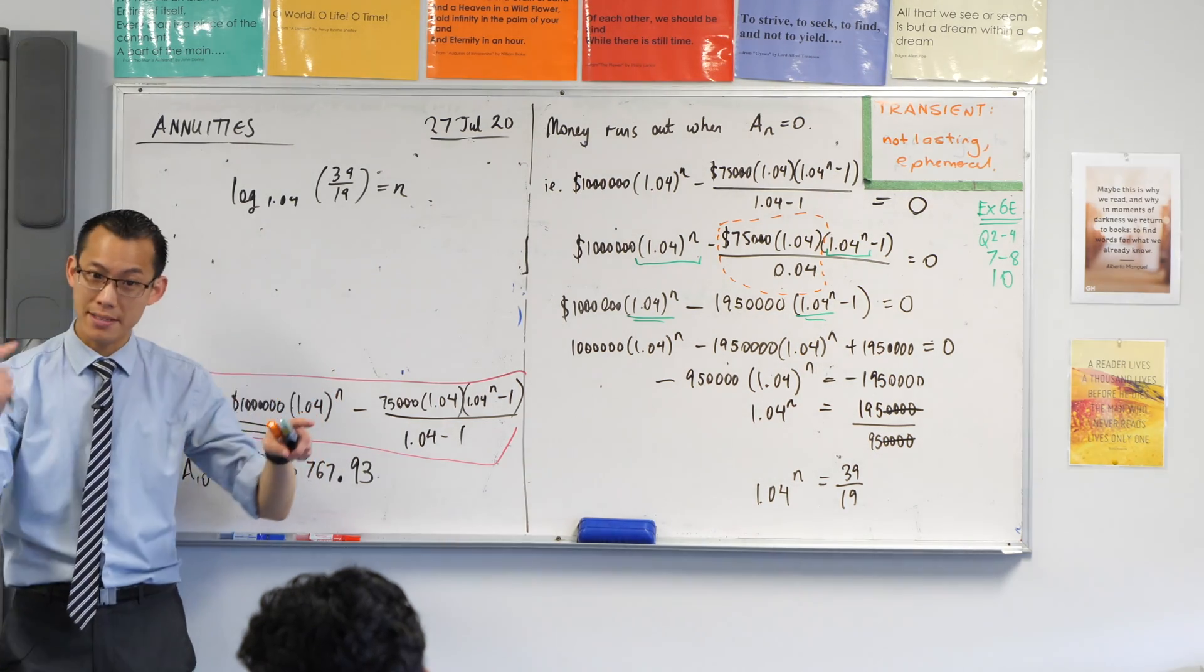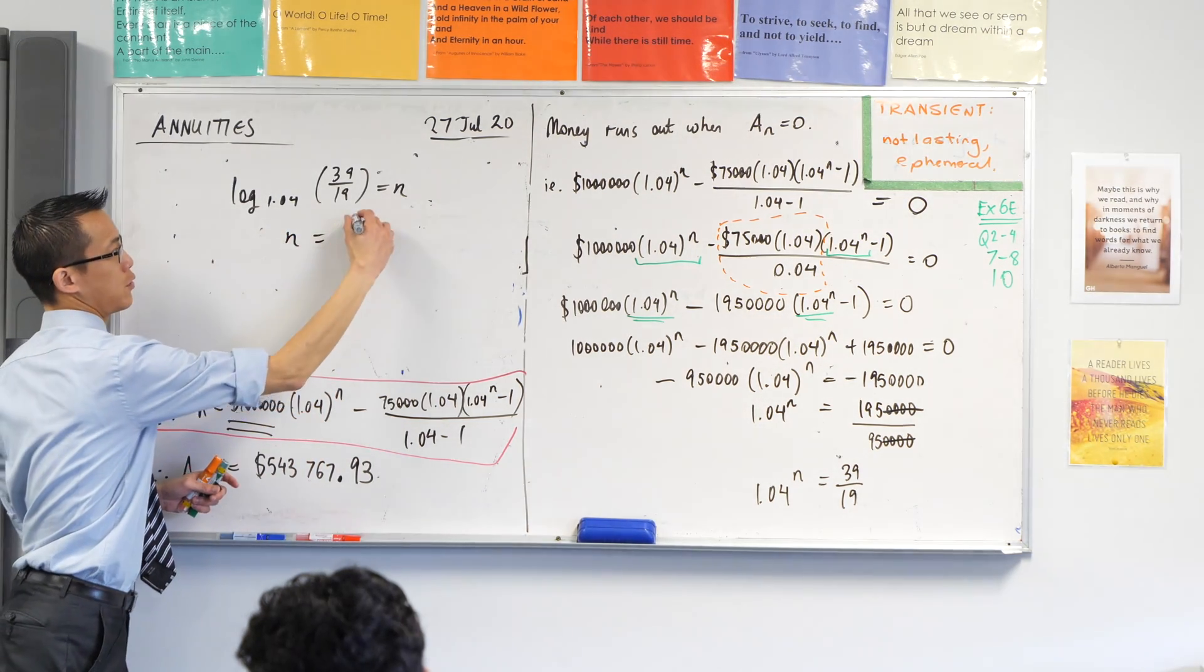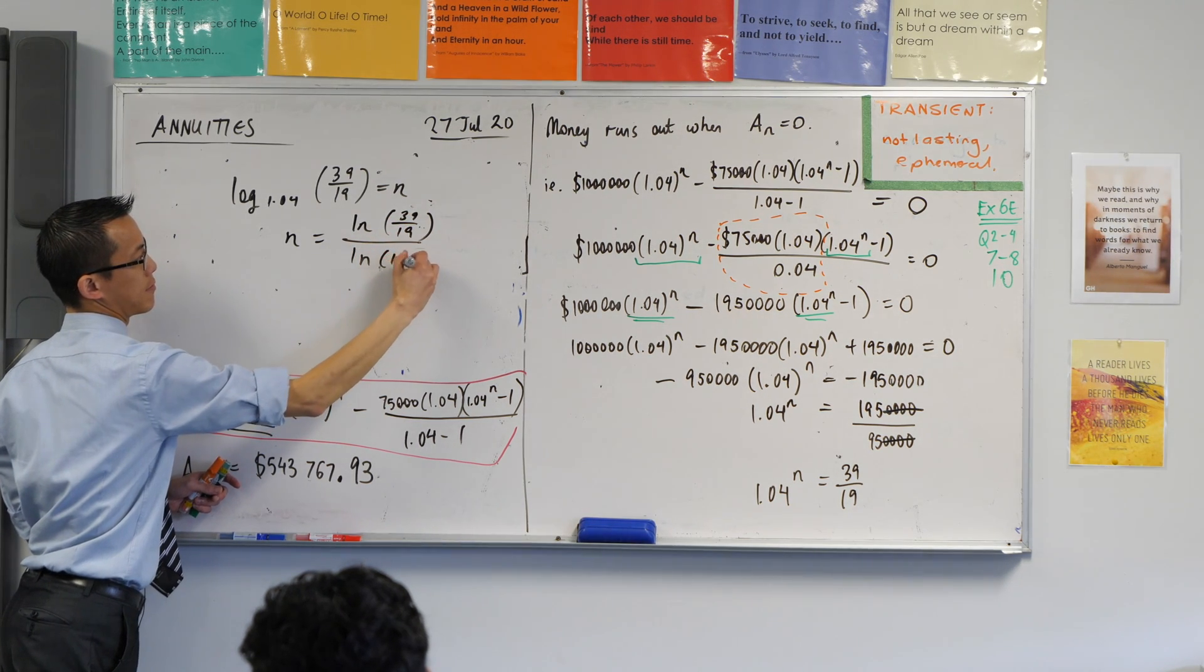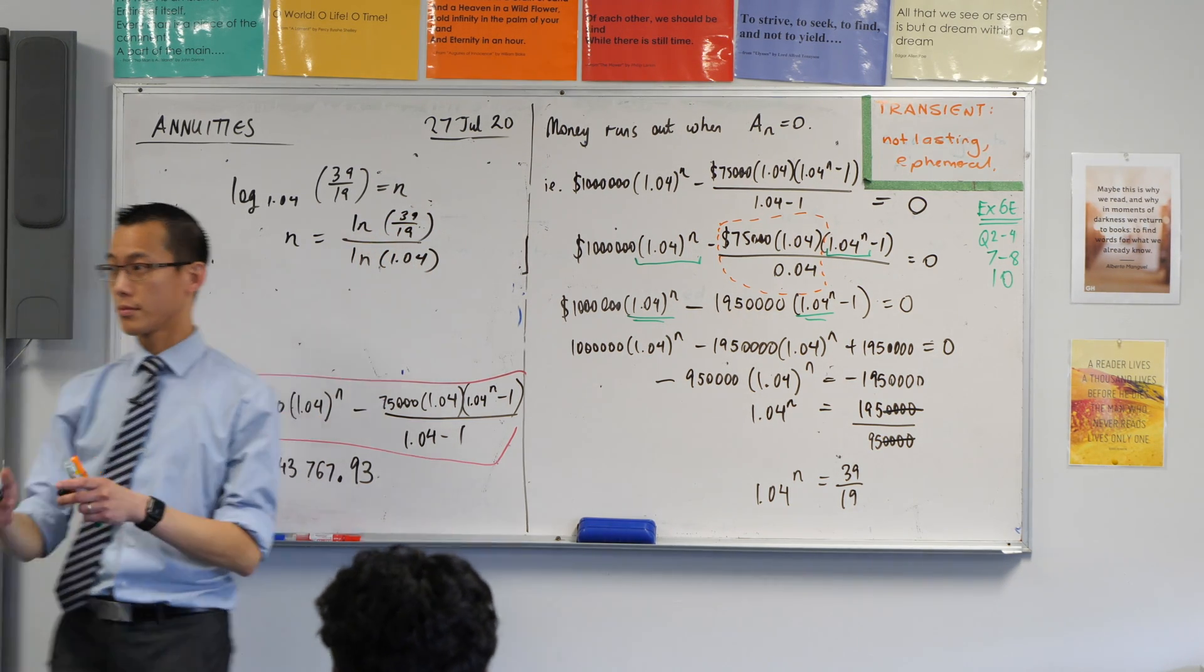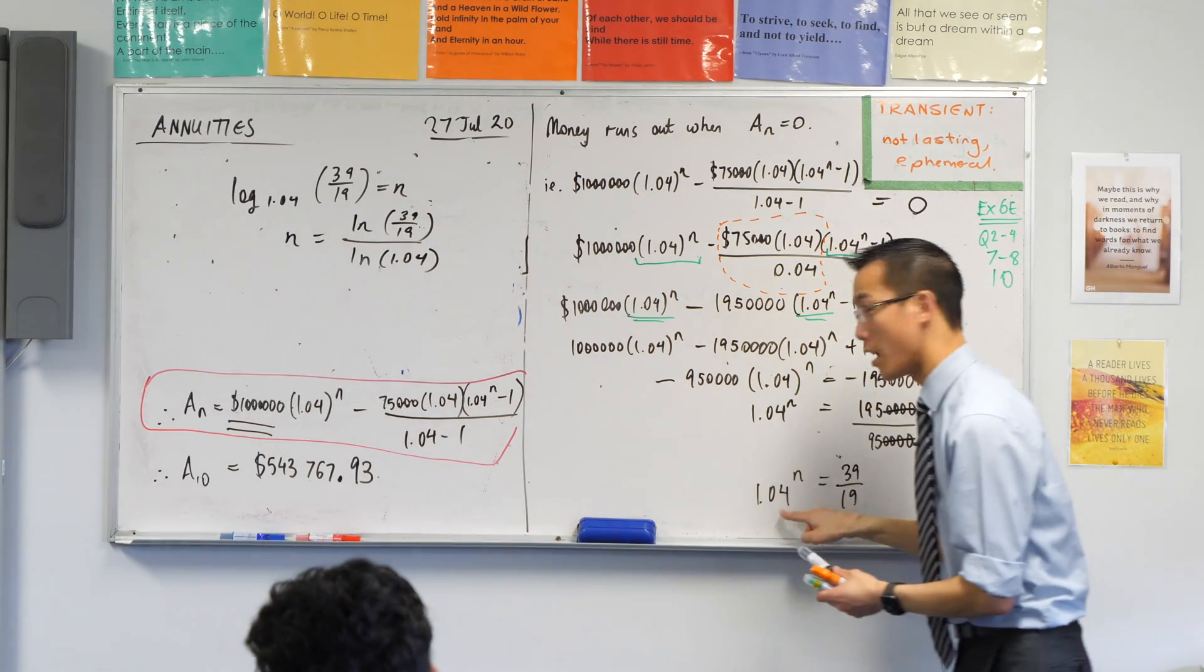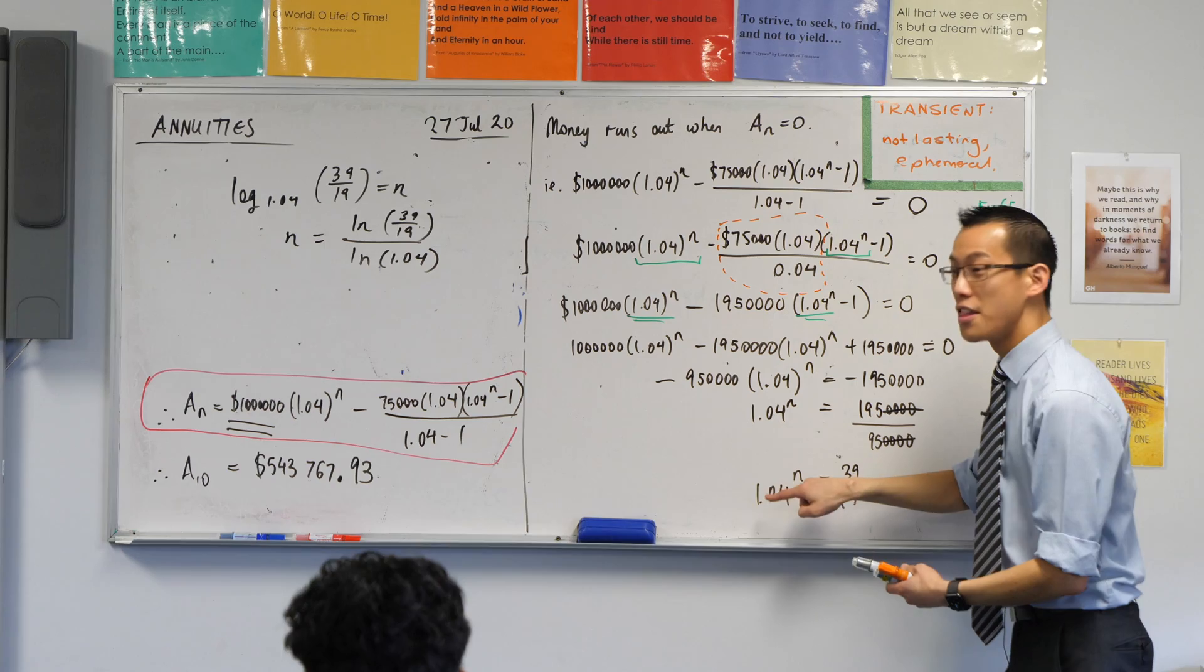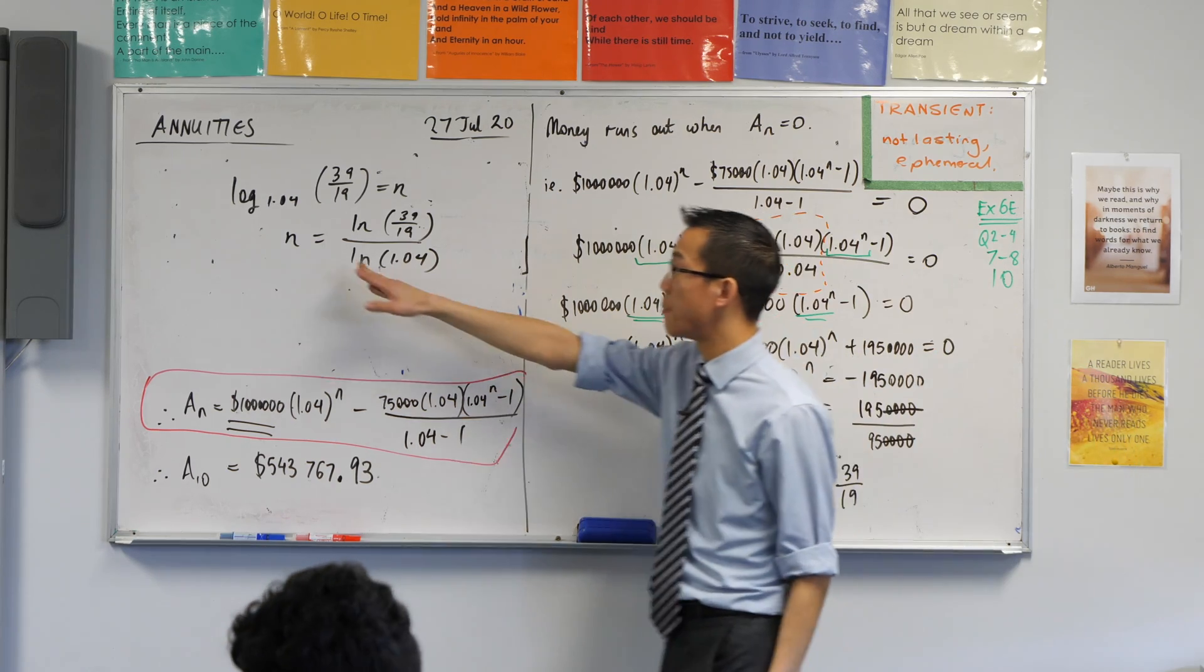Doesn't matter which one you use. Your log laws will tell you this for change of base. Wait, so why did you do 1.04? Oh wait, no, that's 2.0. Yeah, it's coming from here. It's coming from here. The base, careful. The base of your exponential will become the base of your log.